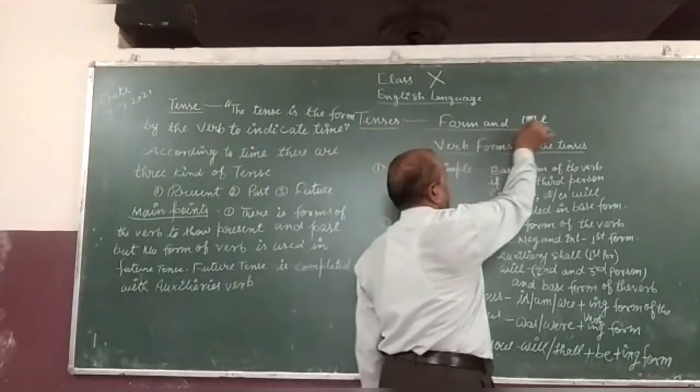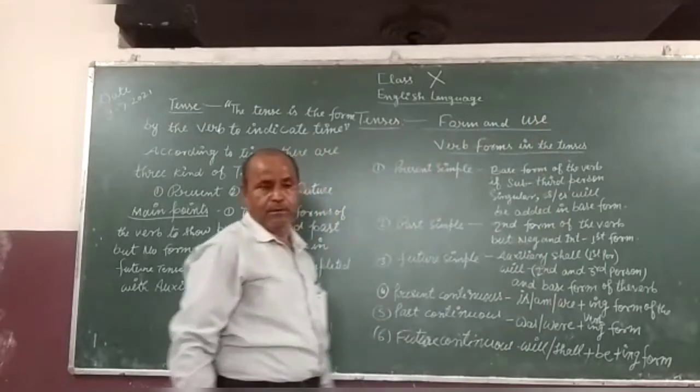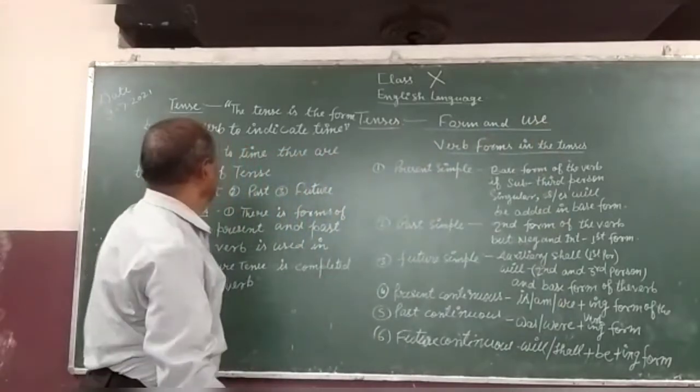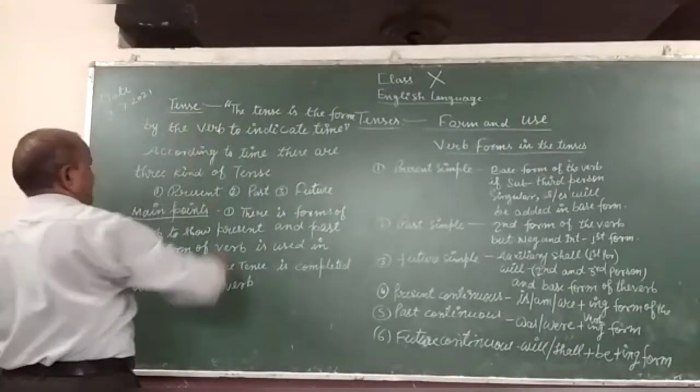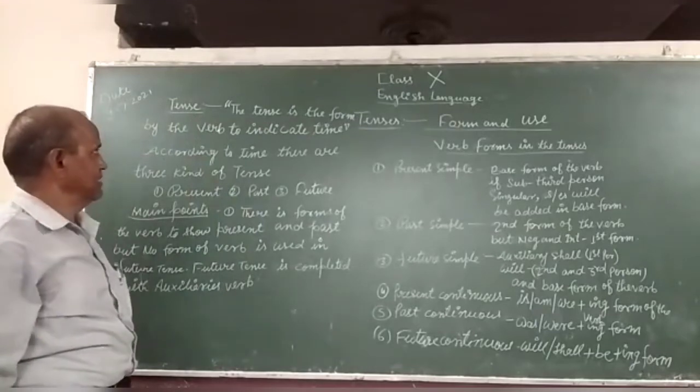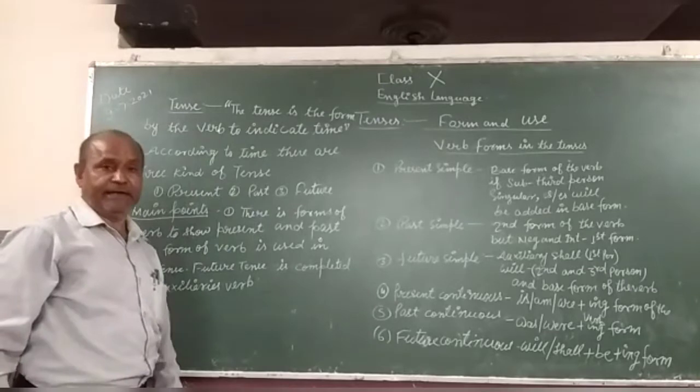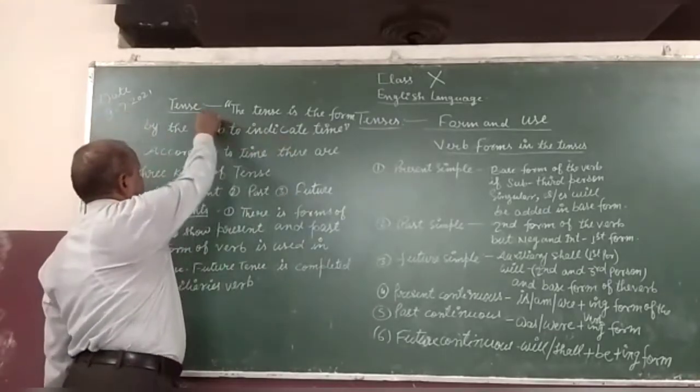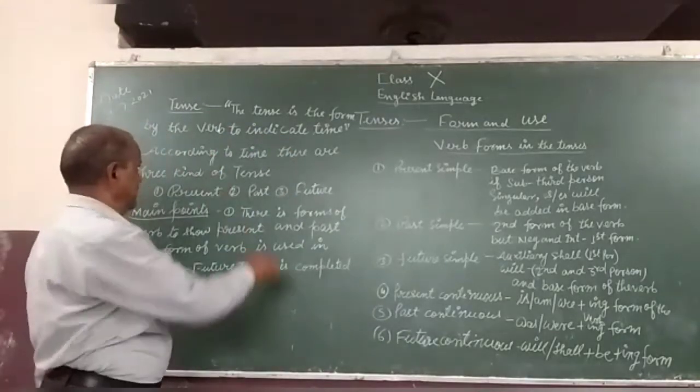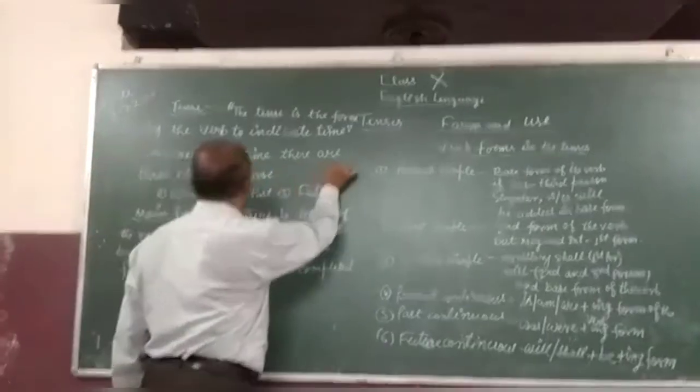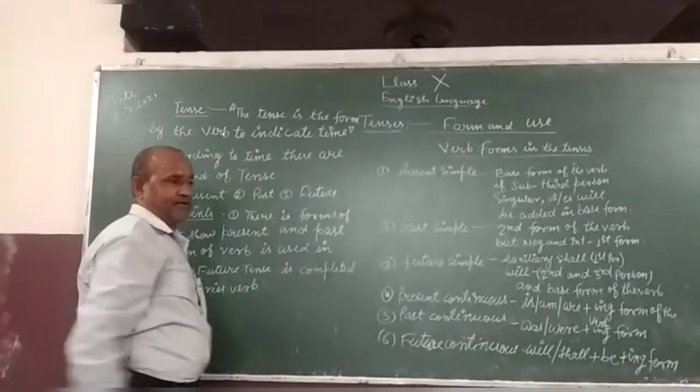The form and use of the verb. The form of the verb is the verb to integrate time. According to time there are three kinds of tense.